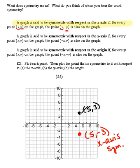Okay, so let's go back to our original point here, (5,3). According to the definition, for any point that you've got, (x,y), the opposite x and the same y value are also on the graph.